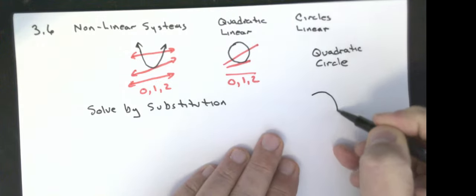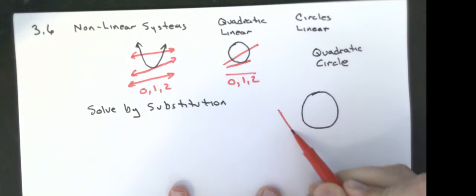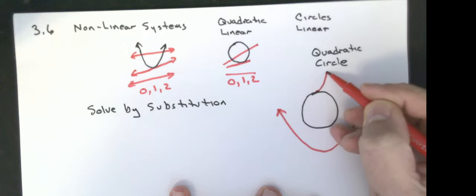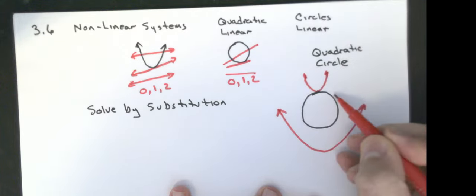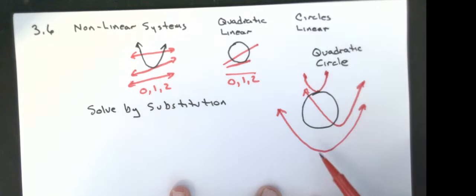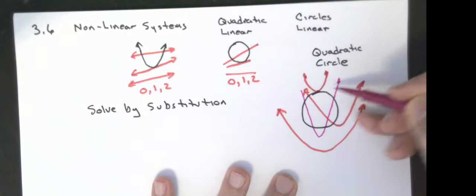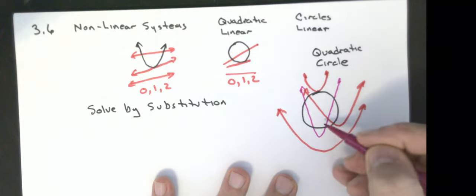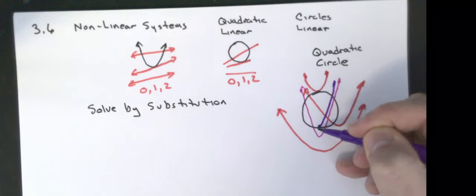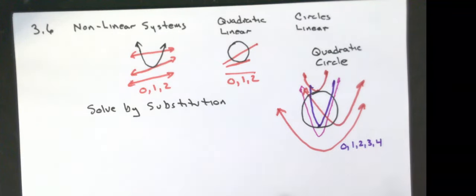Let's look at those possibilities. I've got a circle here. I can have a quadratic that doesn't have any solutions, one that has one solution, one that has two solutions, and one that has four solutions. And if positioned differently, I could have one that has three solutions. So I can have 0, 1, 2, 3, or 4 solutions.